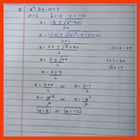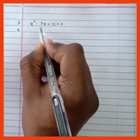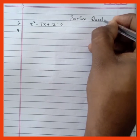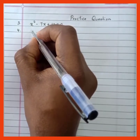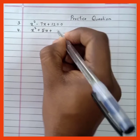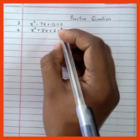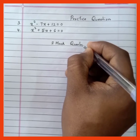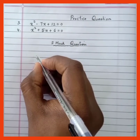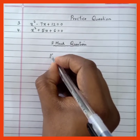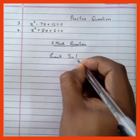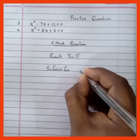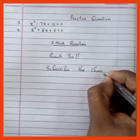Do try to practice these questions by yourself: x² - 7x + 12 = 0 and x² + 5x + 6 = 0. Solve these quadratic equations by formula method — they are very important from the examination point of view. Hopefully you have understood the concept. If you find my videos useful, do subscribe to the channel for more videos and notifications.